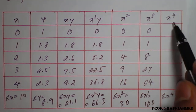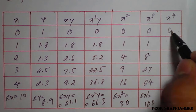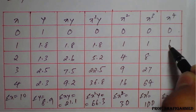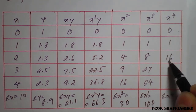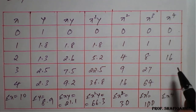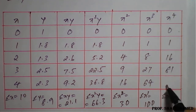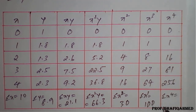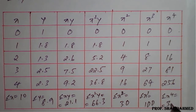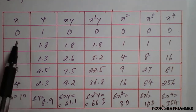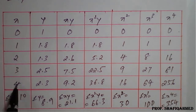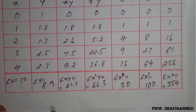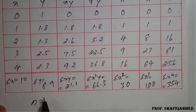For x⁴: 0⁴=0, 1⁴=1, 2⁴=16, 3⁴=81, 4⁴=256, so summation(x⁴) = 354. Counting the data points — 1, 2, 3, 4, 5 — the value of n is 5.